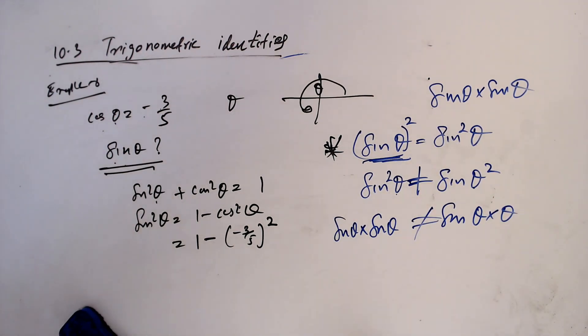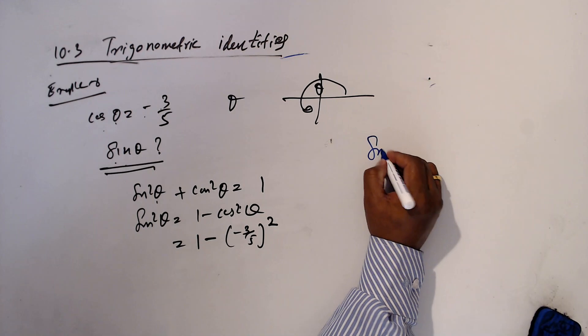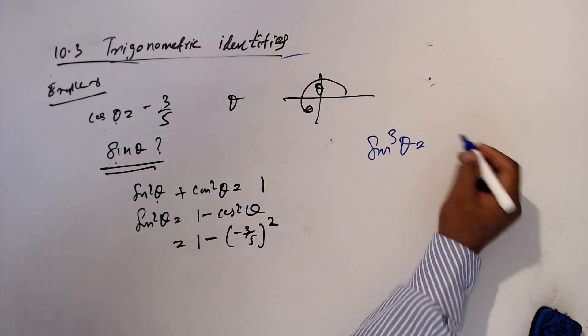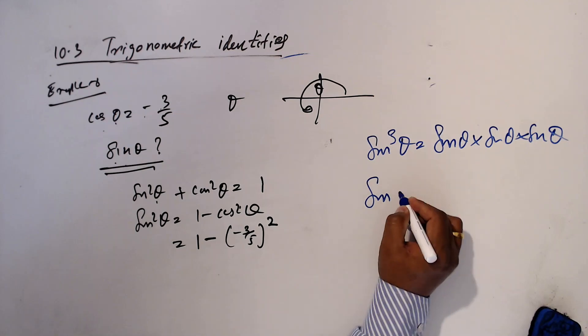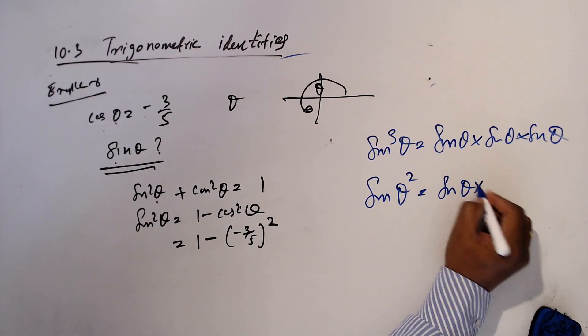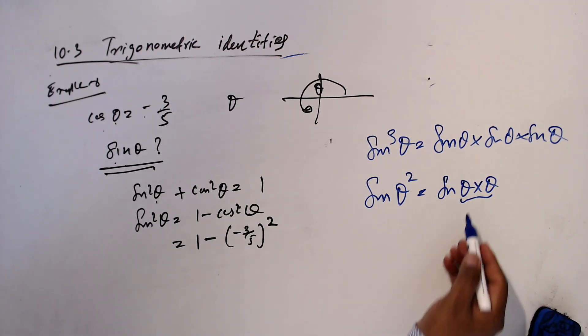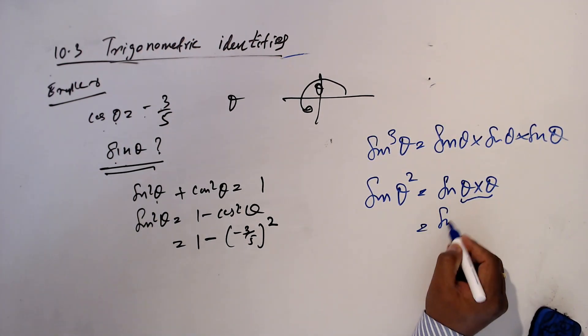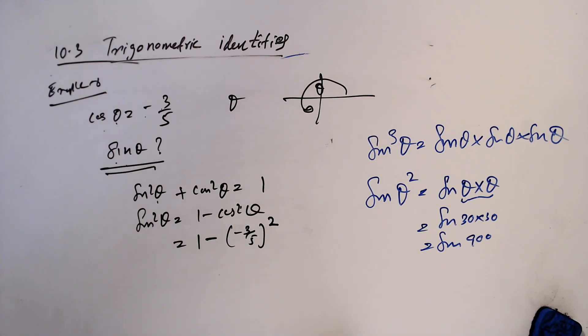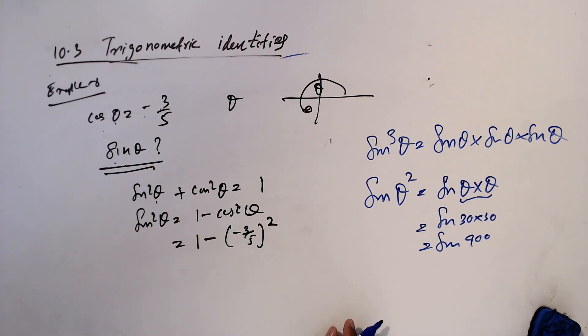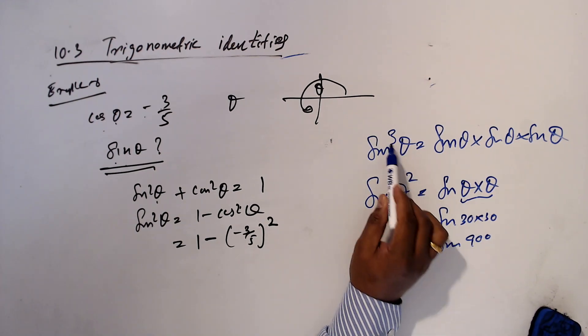So they are not equal. Simply your knowledge should be sine cube theta means sine theta times sine theta times sine theta. Sine theta square means sine theta times theta. So this is an angle. Angle times when you multiply is still also angle. Angle times sine theta times sine theta times theta. So this is going to be sine 900, we write as 30 times 30. Make sure that when you write this square or the cube or the power, we have to write in the right place.